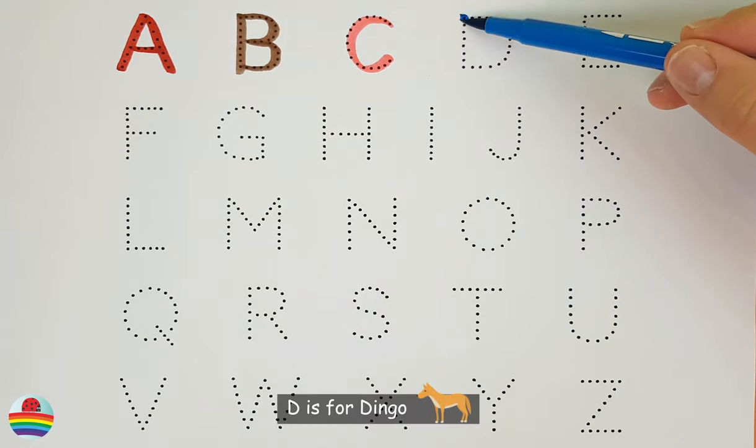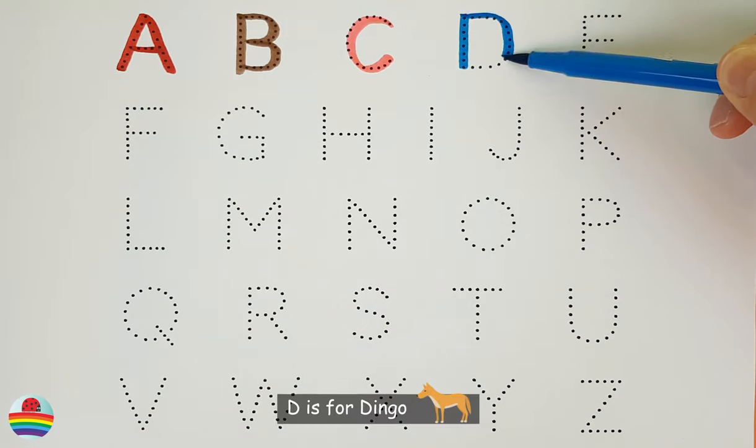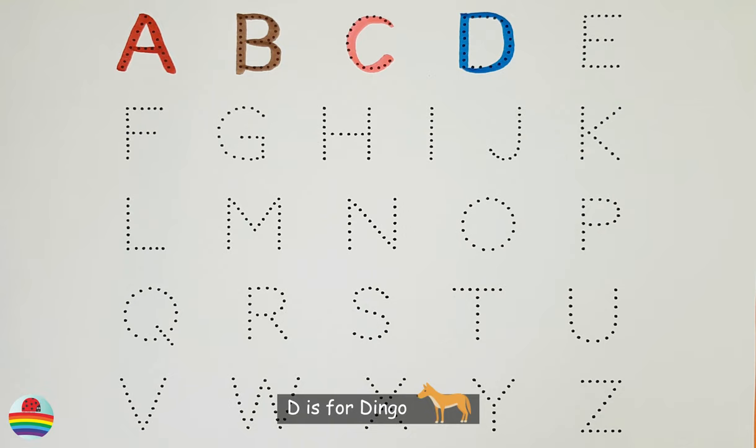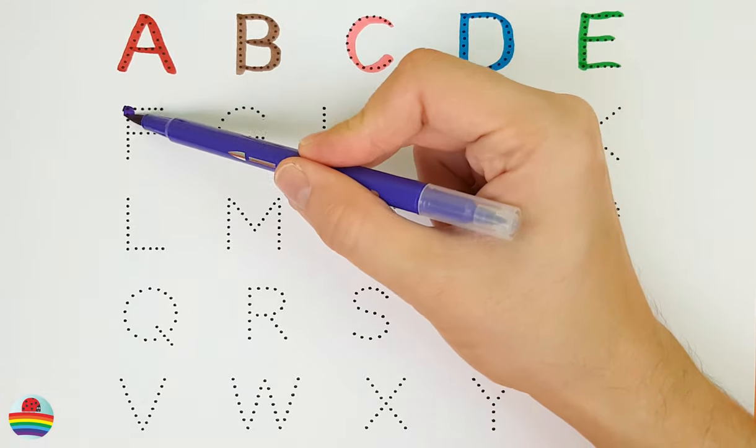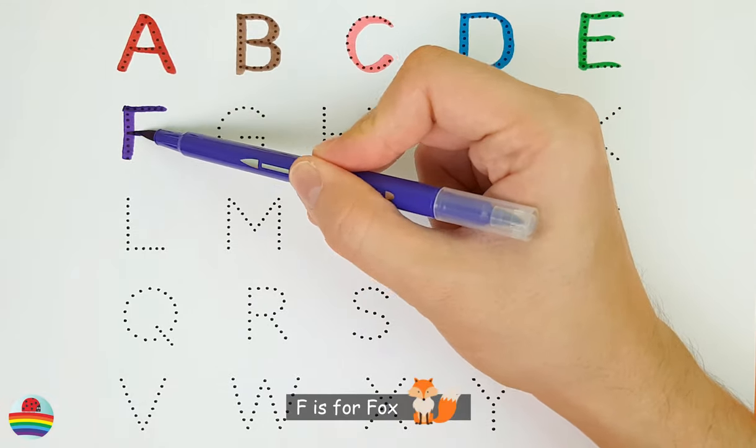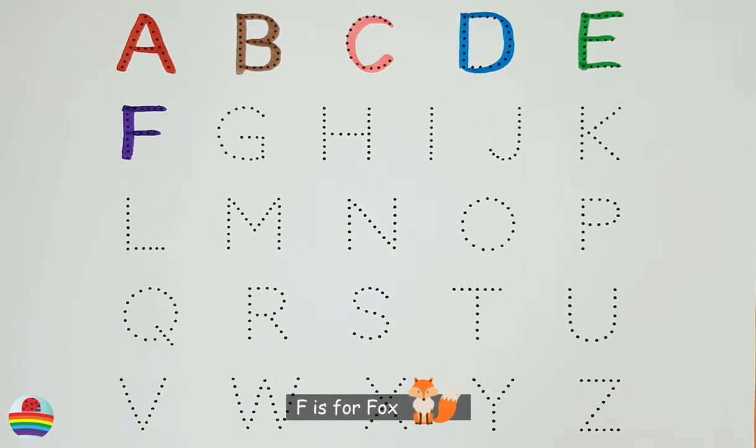D. D is for dingo. D. E. E is for echidna. E. F. F is for fox. F.